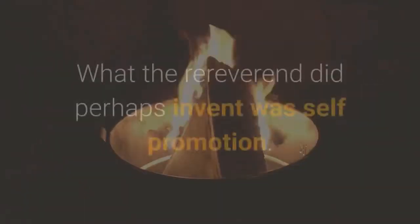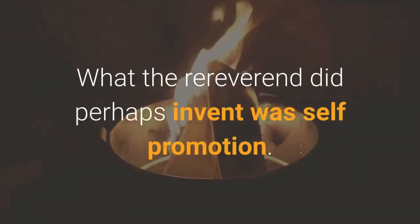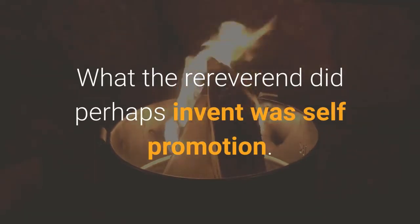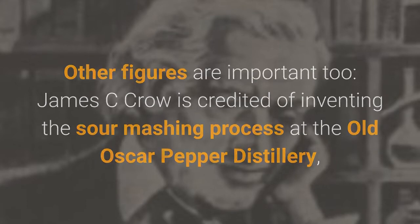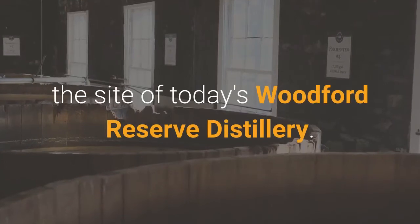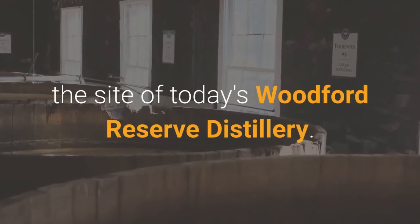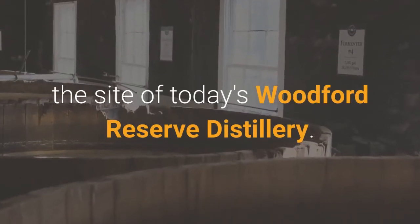What the Reverend did perhaps invent was self-promotion. Other figures are important too — James C. Crowe is credited with inventing the sour-mashing process at the Old Oscar Pepper Distillery, the site of today's Woodford Reserve Distillery.